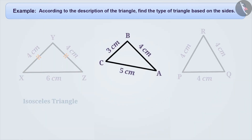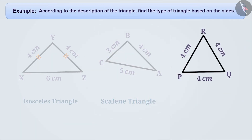From the description provided for triangle ABC, we understand that the length of the three sides are not equal. Therefore, we call such a triangle a scalene triangle. From the description provided for triangle PQR, we understand that the length of all three sides are equal. Therefore, we call such a triangle an equilateral triangle.